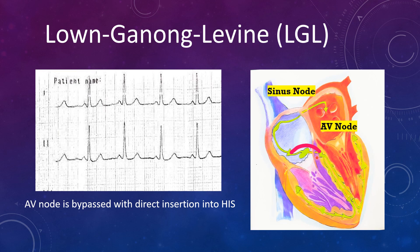Because the conduction bypasses the AV node, the PR interval is shorter — decreasing the time for that conduction delay. And since it is not conducting into the ventricular myocardium but instead inserting directly into the His-Purkinje system — which consists of fast-conducting fibers — the PR interval will be short but there will be no delta wave. That is the key difference between these two pathways. LGL syndrome is associated with tachycardia and tachyarrhythmia, so we should be aware of that. LGL is rarely seen in practice, but it is an anatomical entity and we should understand its pathophysiology.